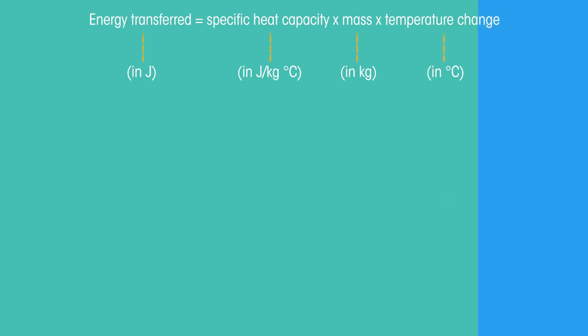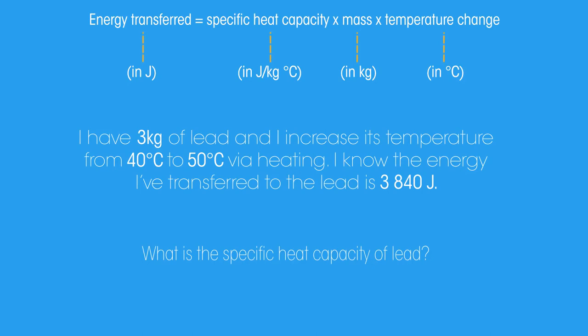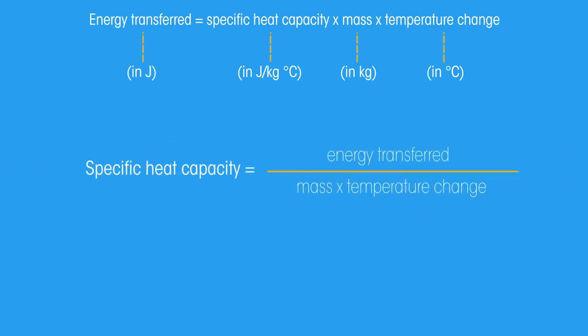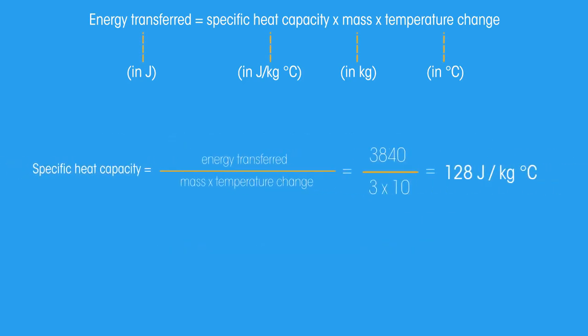Let's have a look at a problem. Pause the video and attempt to calculate the specific heat capacity of lead. How did you get on? The energy transferred is this, the mass is this, and the temperature change is 10 degrees Celsius, because it's this take away this. Using the rearranged equation, substitute in the values and we get 128 joules per kilogram Celsius.